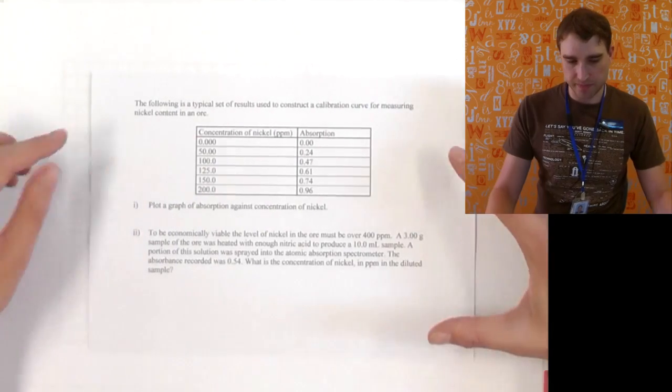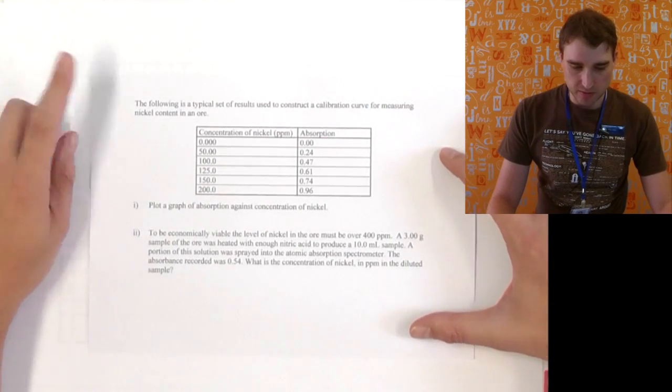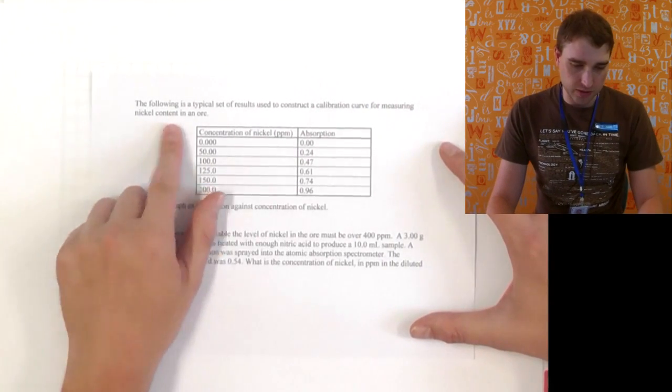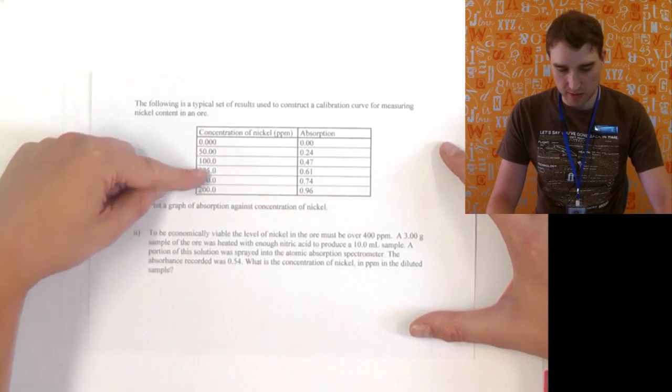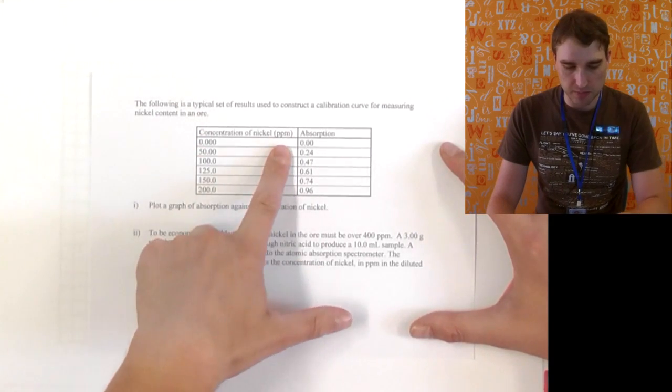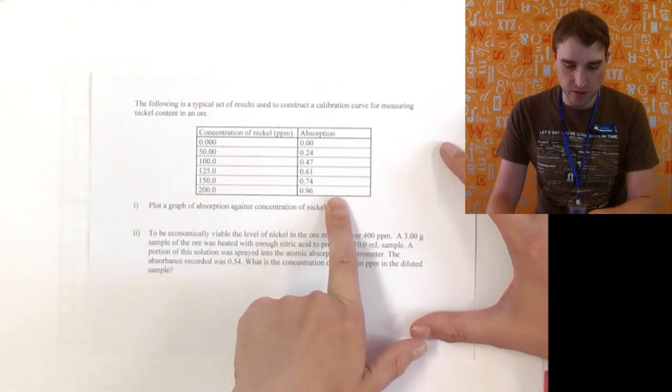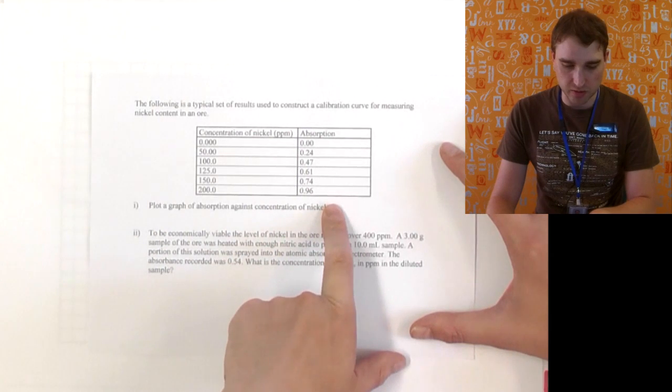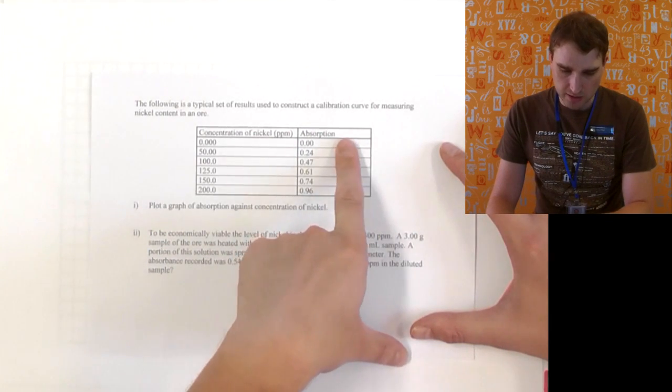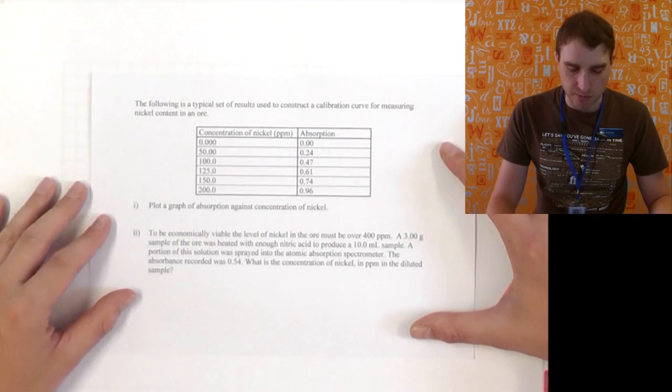So here's an example question. So typical sort of results, we're looking at nickel. So nickel content in an ore. We have a series of concentrations of nickel in parts per million. And we've got an absorption ranging from 0 to close to 1. And there's no unit for absorption because that's usually an arbitrary unit.